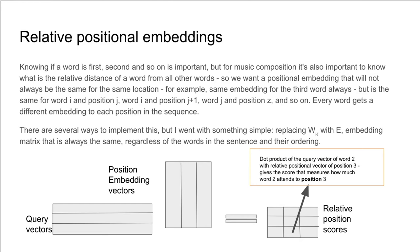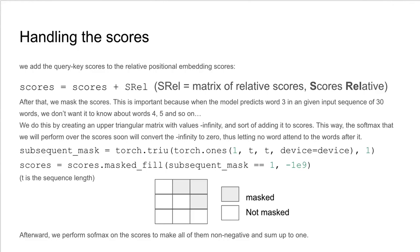There are several ways to implement this. I went with something fairly simple, replacing WQ with E, the embedding matrix that is always the same, regardless of the words in the sentence and their ordering. Now you have two sets of scores, one from Q multiplied by K, and one from Q multiplied by E, the relative distance embedding matrix. We just add those scores one to another to get the final scores, because those matrices have the same shape.